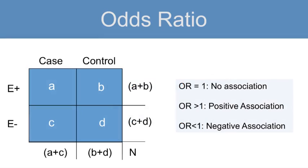When the odds ratio is equal to 1, there is no association between the exposure and the outcome of interest. When the odds ratio is greater than 1, there is a positive association. And when the odds ratio is less than 1, there is a negative association.